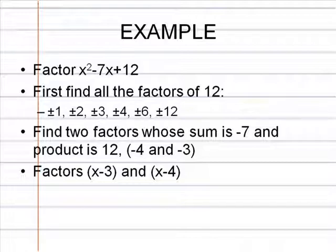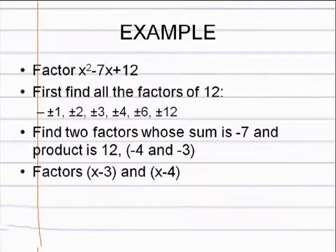Next, we want to find the two factors that when added together give us negative 7. So for our example, it would be negative 4 and negative 3. Since negative 4 times negative 3 equals 12, then negative 4 plus negative 3 equals negative 7. So the factors for this polynomial are x minus 3 and x minus 4.